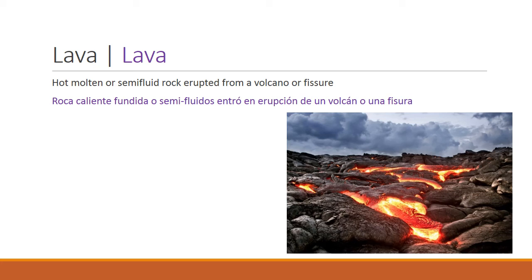Lava is hot molten or semi-fluid rock erupted from a volcano or fissure on the Earth's surface. Lava is what magma is called when it is outside of the Earth — magma is found beneath the ground, while lava is flowing over the Earth's surface after a volcanic eruption or as it rises through a fissure.